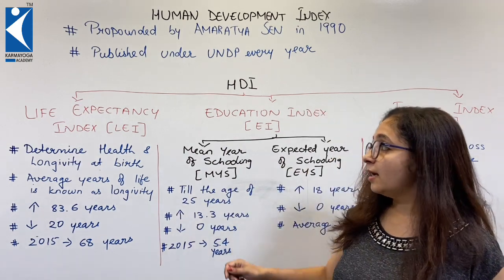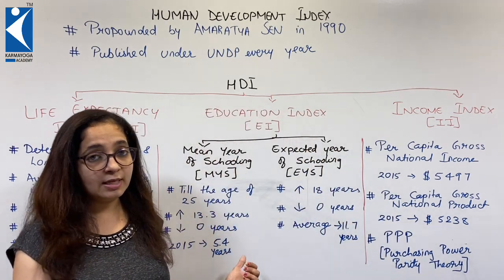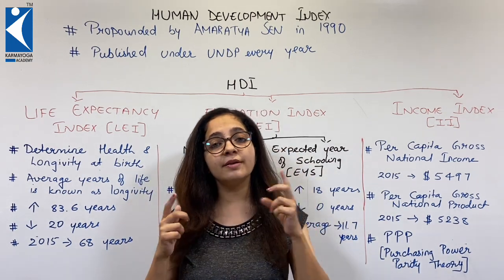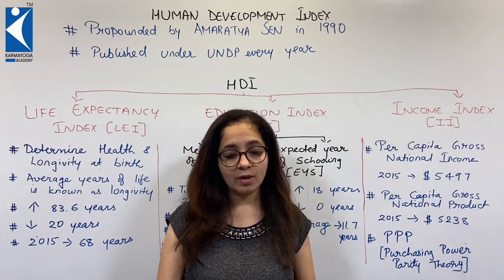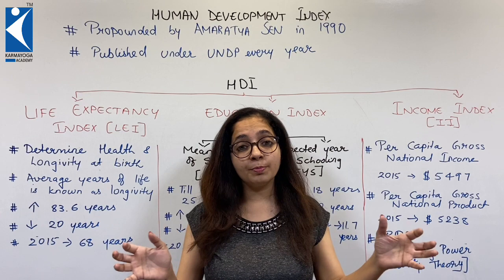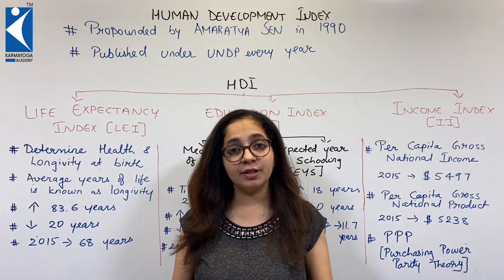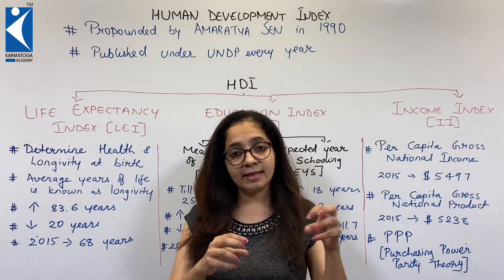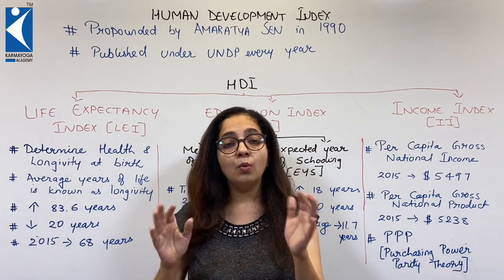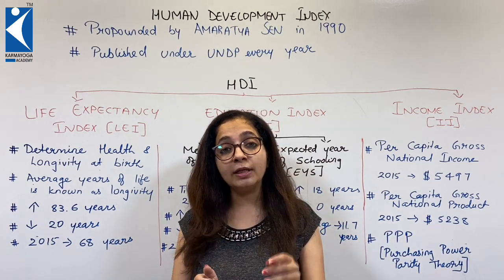The third parameter is the Income Index. How long will you live, how healthy and educated will you be — and finally, why we do all this is for money. Income Index covers how much you earn. There are two concepts: Gross Domestic Product (GDP) and Gross National Income (GNI). GDP is the total monetary value of all products and services manufactured across all sectors in a given year. For example, if India's primary sector produces 1 billion dollars and secondary and tertiary sectors produce another 2 billion, then India's GDP would be 3 trillion dollars.